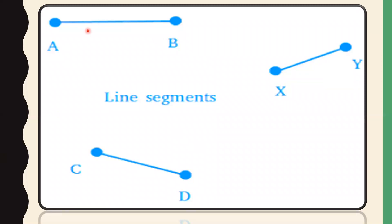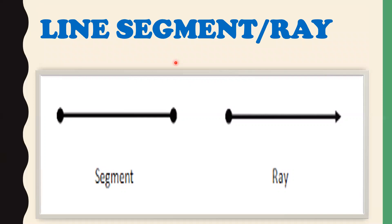Here are a few more examples of line segments: AB, XY, CD. Now, there are two related concepts: line segment and ray. In a line segment, there is a dot on both sides. In a ray, there is a dot on one side and an arrow on the other. A ray is a part of a line with a start point but no end point.